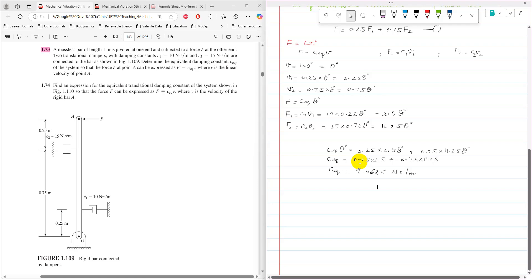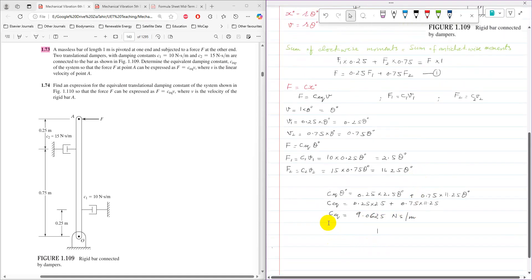C_equivalent equals 0.25 times 2.5 plus 0.75 times 11.25. After calculation, C_equivalent comes as 9.0625 Newton-second per meter. That is the answer.